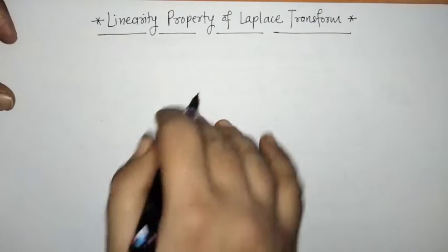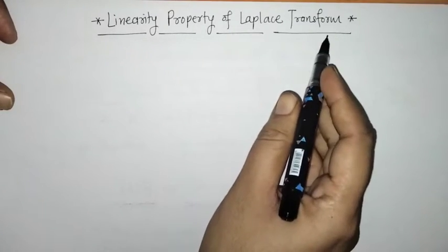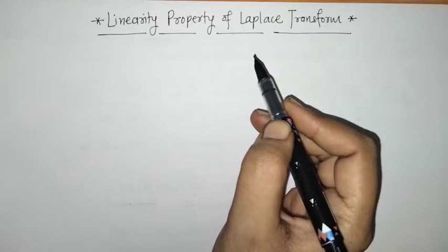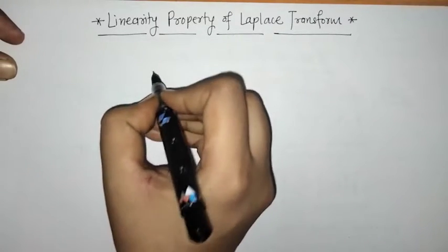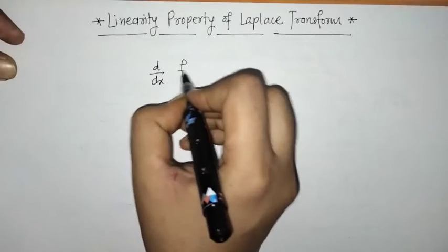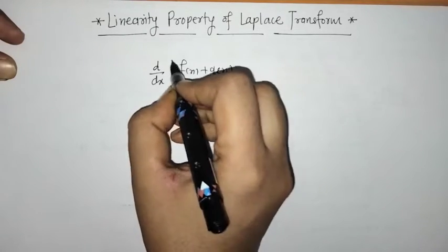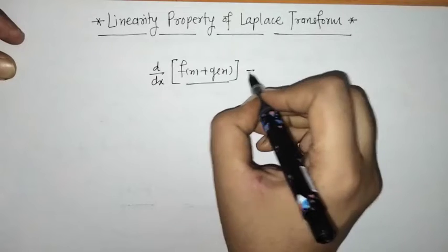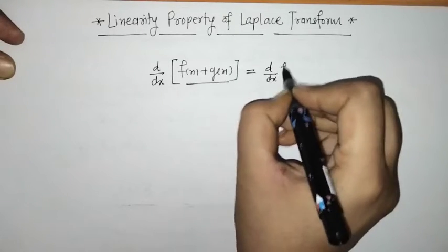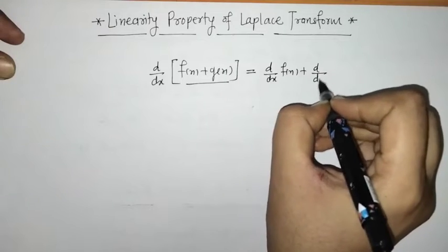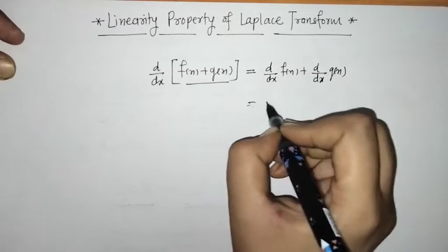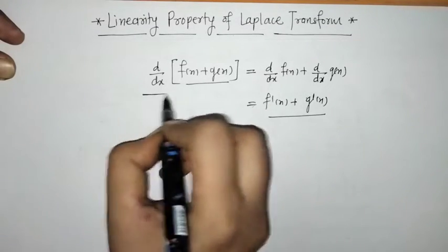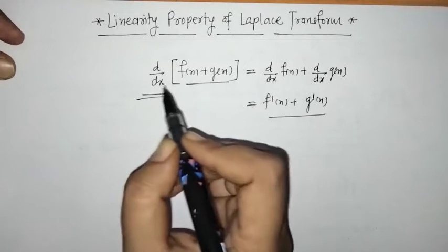Hello everyone, today we are going to discuss the linearity property of Laplace transform. We know that derivative and integral are linear operators, meaning they satisfy the linearity property. For example, the derivative of a sum of two functions f(x) and g(x) can be operated separately: derivative of f(x) plus derivative of g(x). So the derivative is a linear operator.